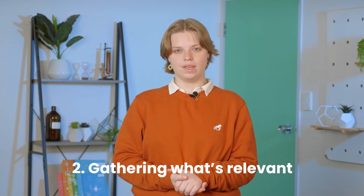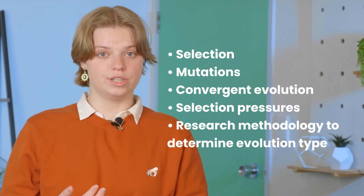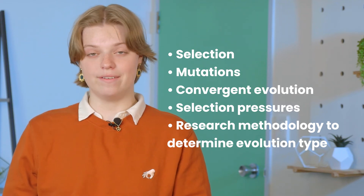Step two: gathering what's relevant. Let's go back to the big piece of information we've been given to work with. Male crickets have normal and more recently evolved flat-wing phenotypes. We also know that the islands on which they are found are neighbouring, and that sounds created by normal wings attract a parasitic fly that kills crickets. This is pretty much all we need to know to actually begin answering the exam question. You may have noticed that the explain and discuss sections heavily rely on you drawing on knowledge not explicitly given to you in the exam. You'll need to have a handle on concepts like selection, mutations, convergent evolution, selection pressures, and research methodology to determine evolution type.